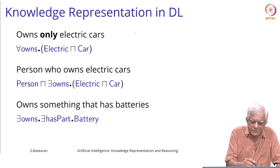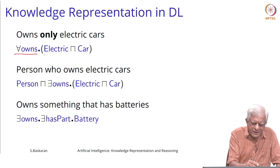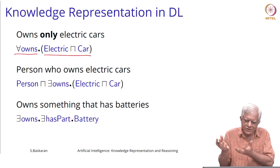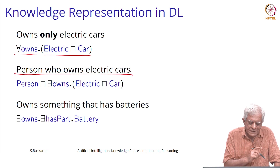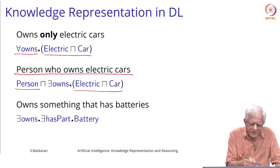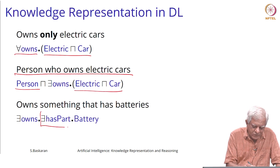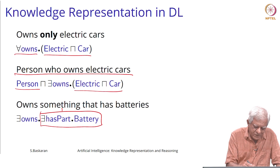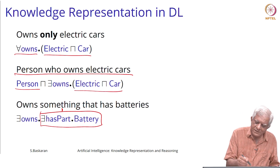If we wanted to say the set of people who own only electric cars, we can use the 'for all owns' and specify the class from which whatever they own comes from. If we want to say a person who owns electric cars — meaning at least one electric car — the person must be a person and there must be at least one electric car that the person owns. Someone who owns something that corresponds to a concept that has a part which is a battery.